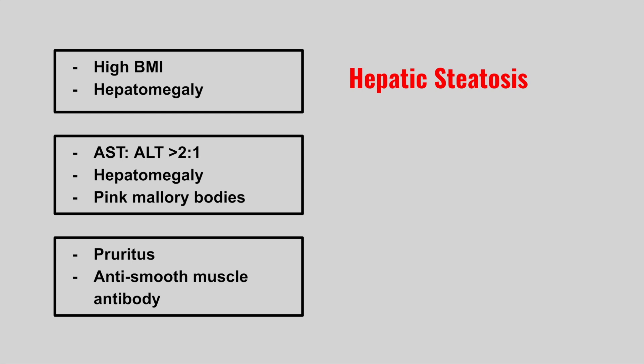The next patient is going to have an AST/ALT ratio of over two to one, hepatomegaly, and pink Mallory bodies. This is alcoholic hepatitis, also called alcoholic fatty liver disease.